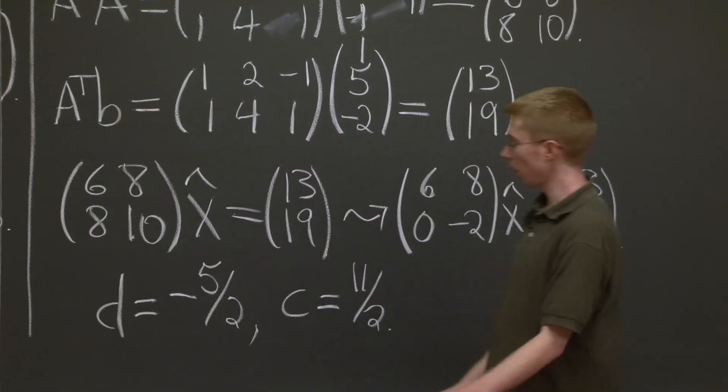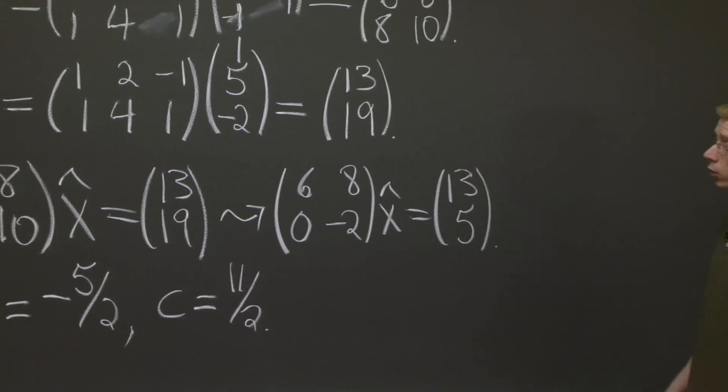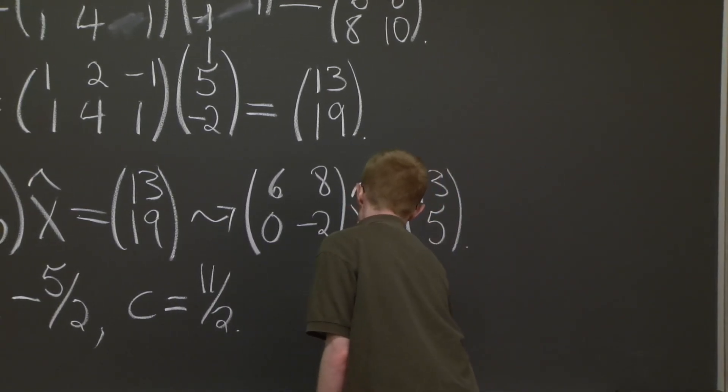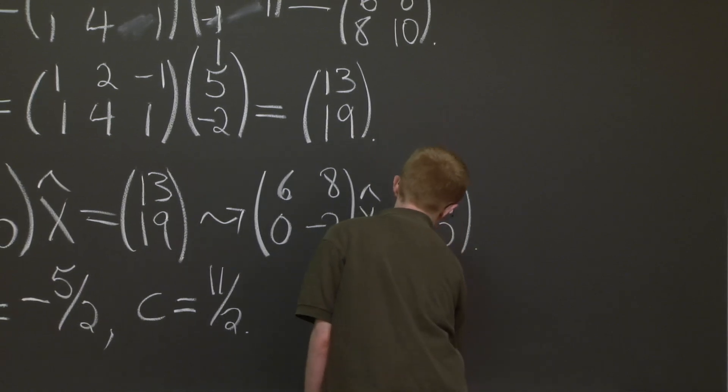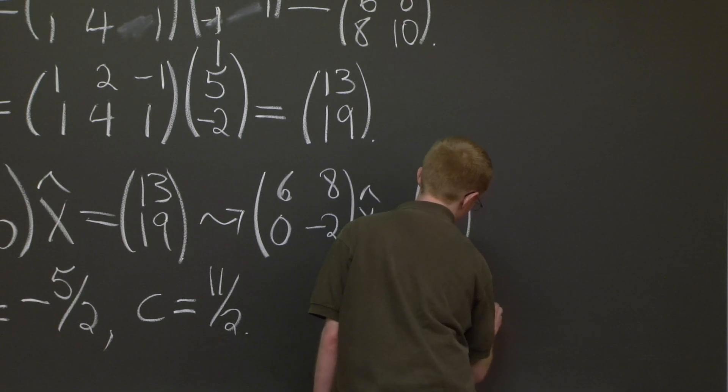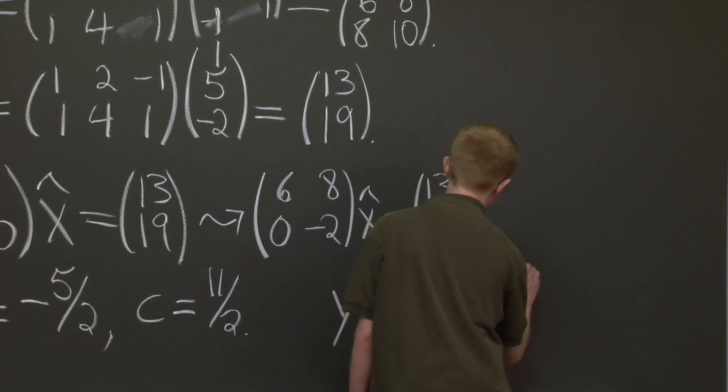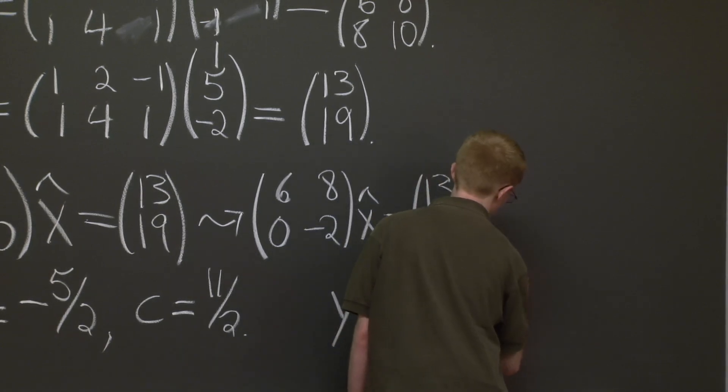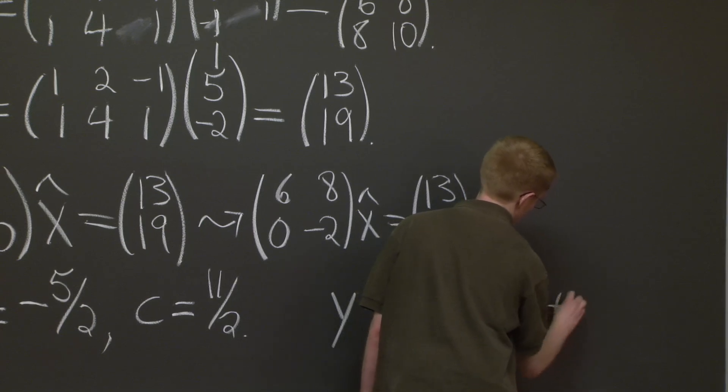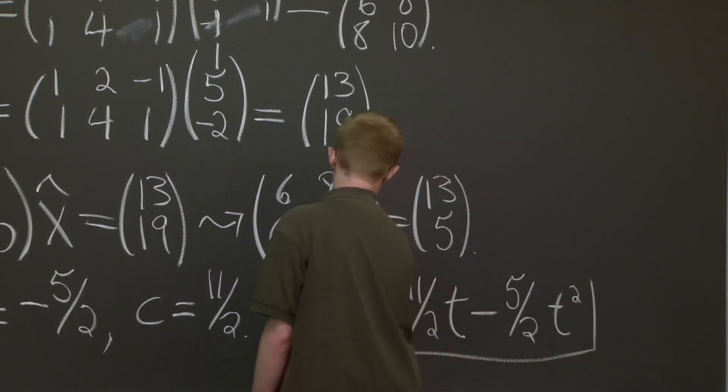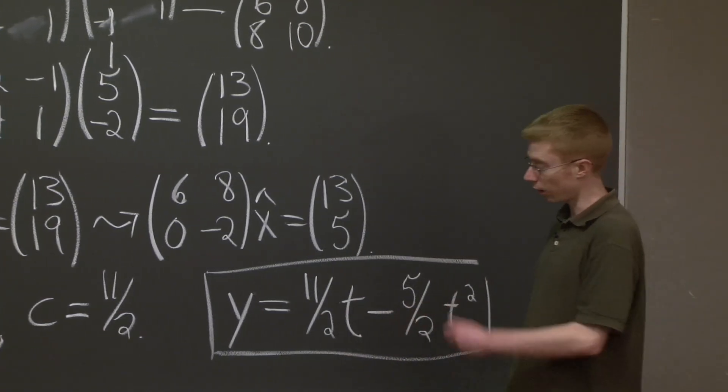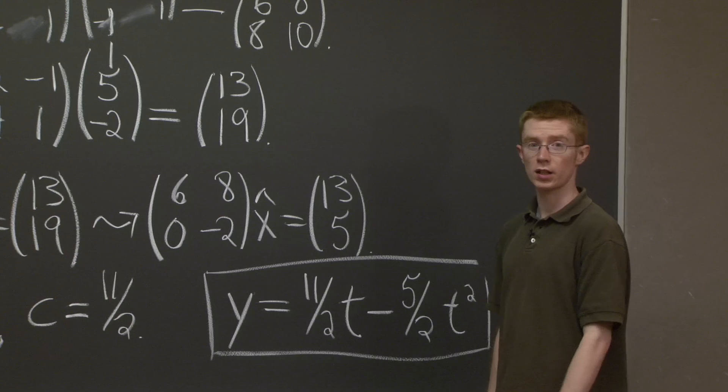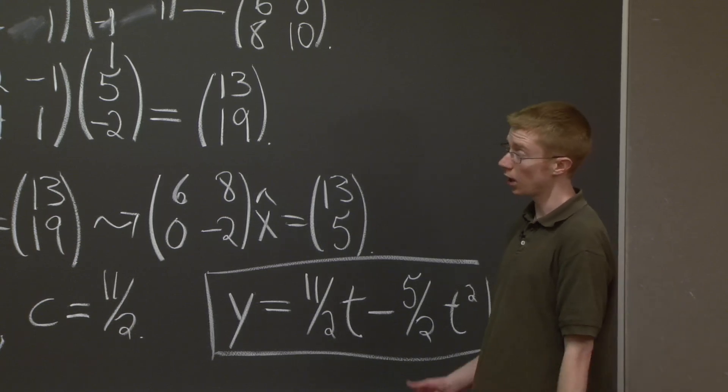So what's our final equation? Our final equation is y = (11/2)t - (5/2)t². Good. OK. So this is our best fit quadratic equation through the origin. Now, before I end, let me do a couple things.